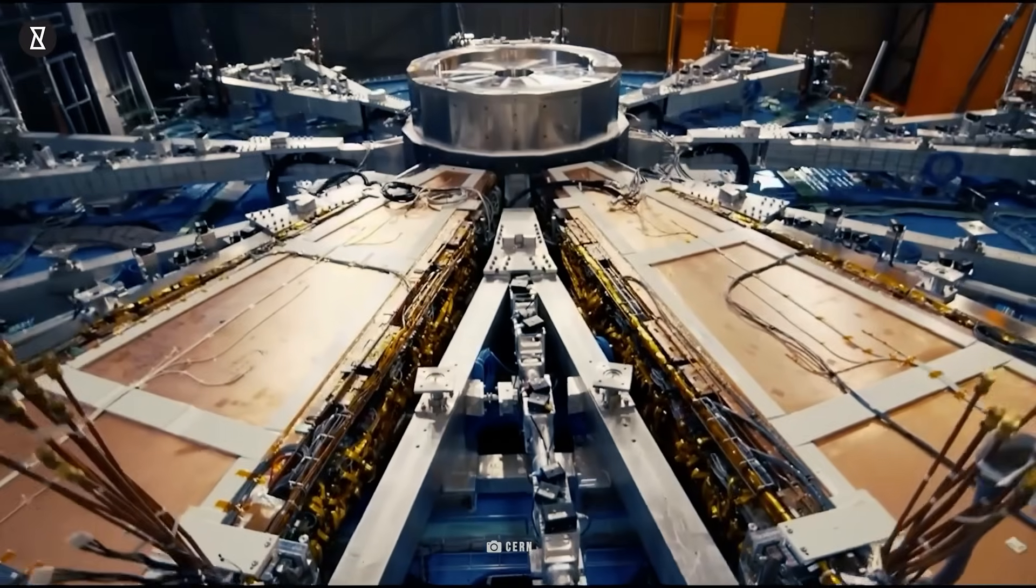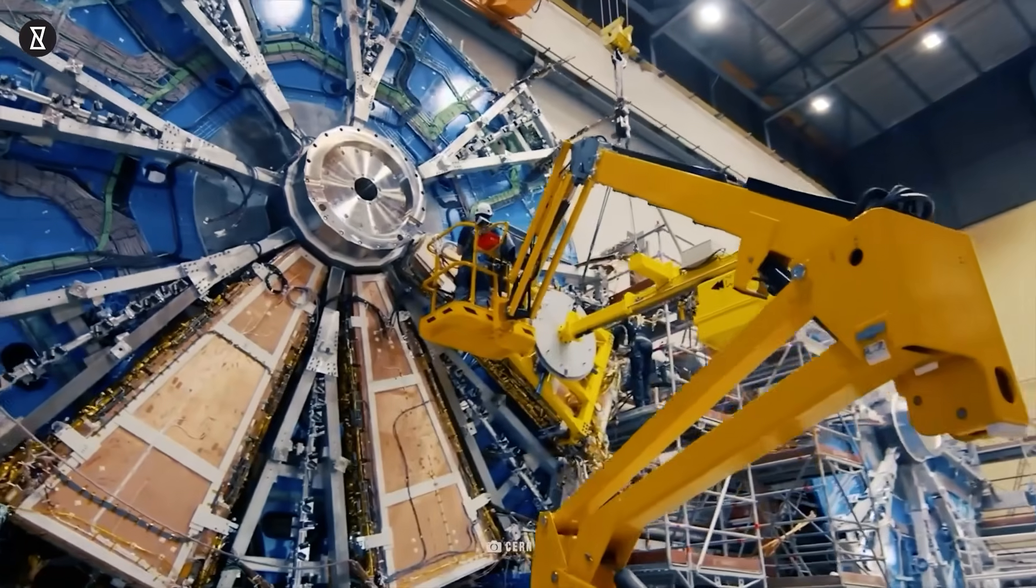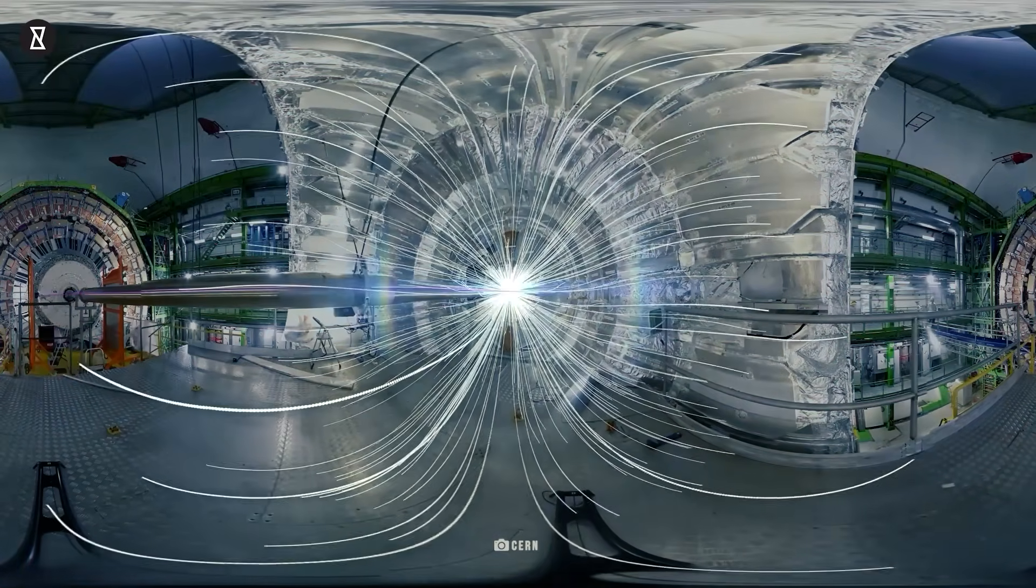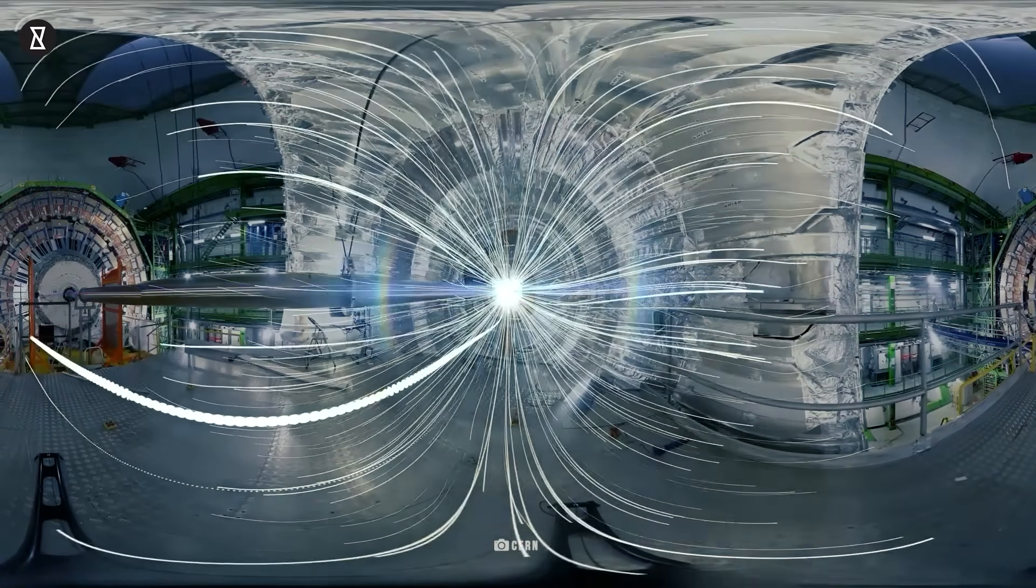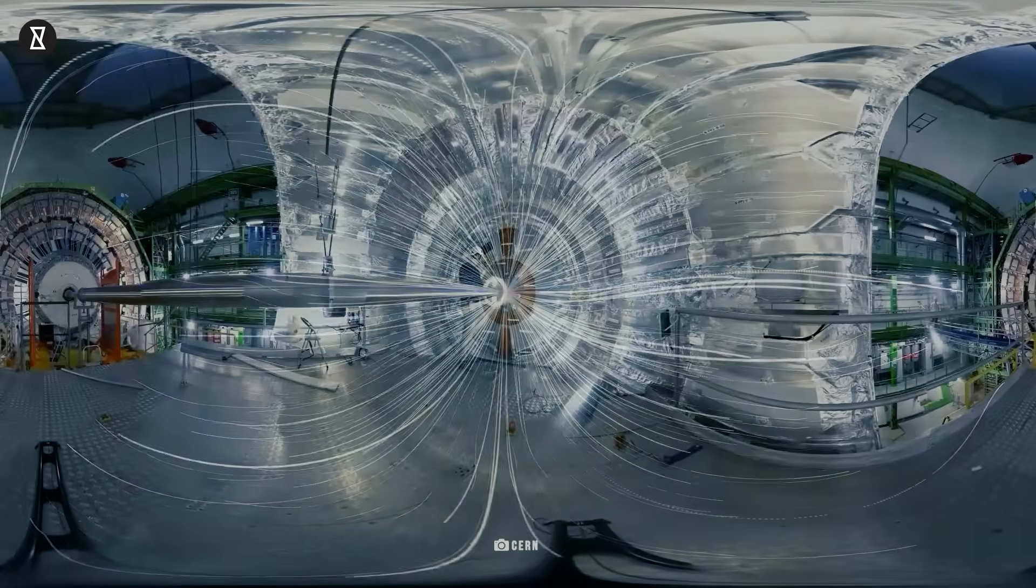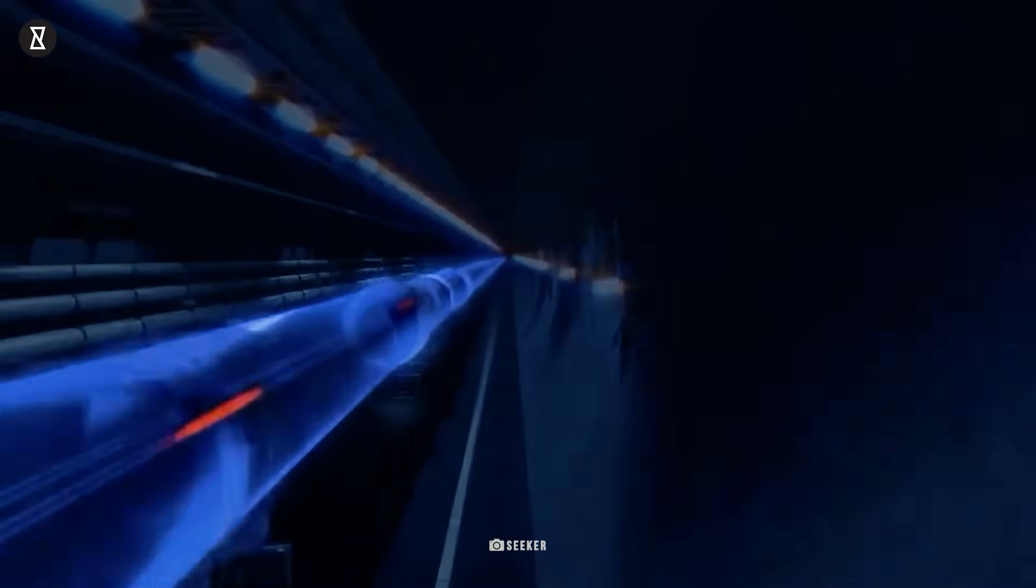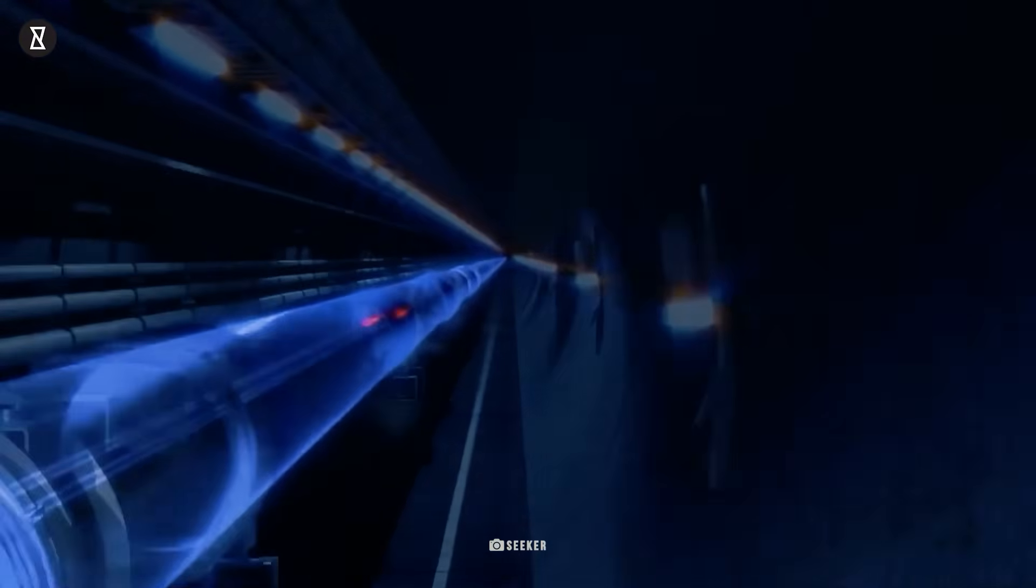The Collider, the largest machine in the world, allows physicists to test the predictions of different theories of particle physics. This includes measuring the properties of the Higgs boson and studying other unresolved questions in particle physics. The LHC performs experiments to understand the basic functionalities of the universe by accelerating two high-energy particle beams and colliding them once they reach a proper speed.